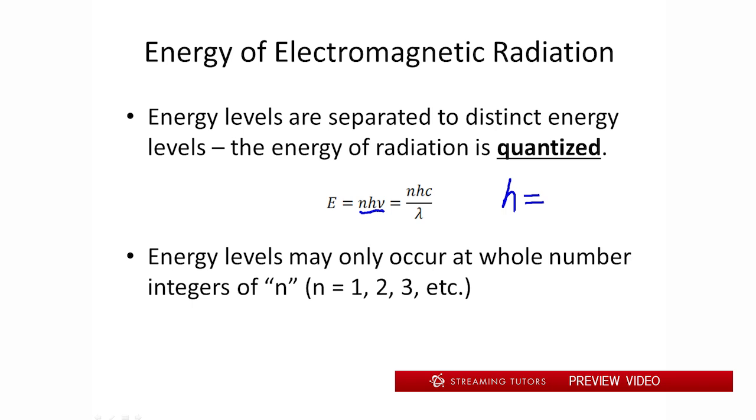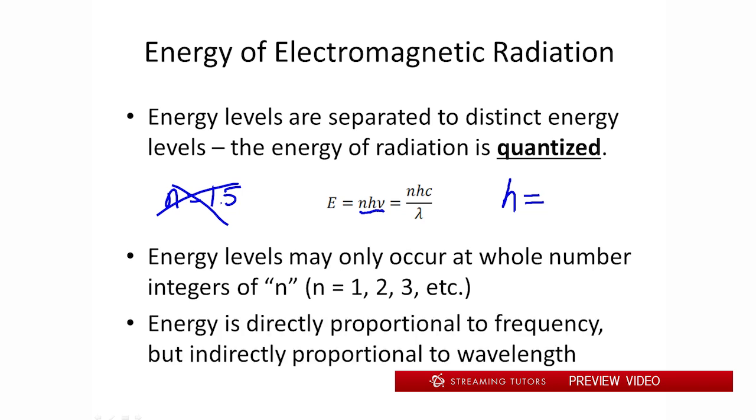And an important thing to note from that is that the energy of a wave is quantized. And that means it can only occur in specific whole integer multiples. So for example, you couldn't have n equal to 1.5. You can't do that. And it's going to be important later when we're looking at atomic spectra, this quantization of electromagnetic radiation. And another important thing to note, we have our energy is directly proportional to our frequency, but indirectly proportional to our wavelength. So what we can say is that if we have a high frequency, we have high energy. But if we have a high wavelength, we have low energy. It's going to be very important that you remember that kind of relationship there.